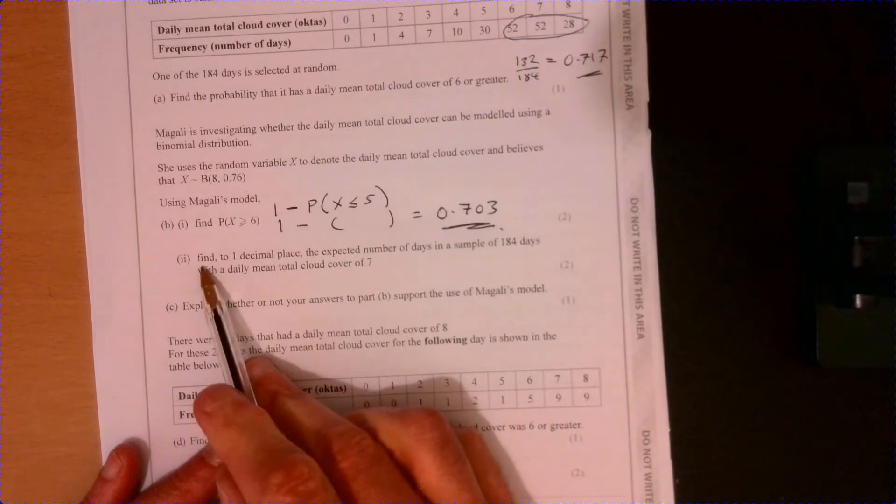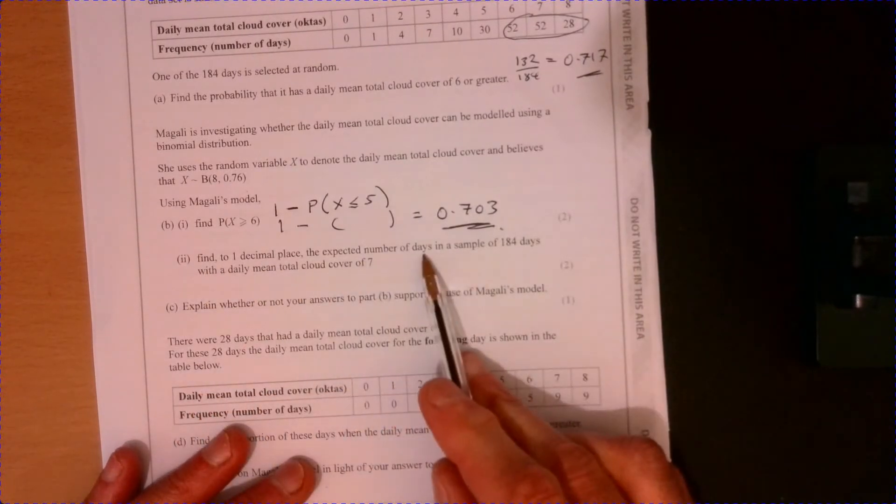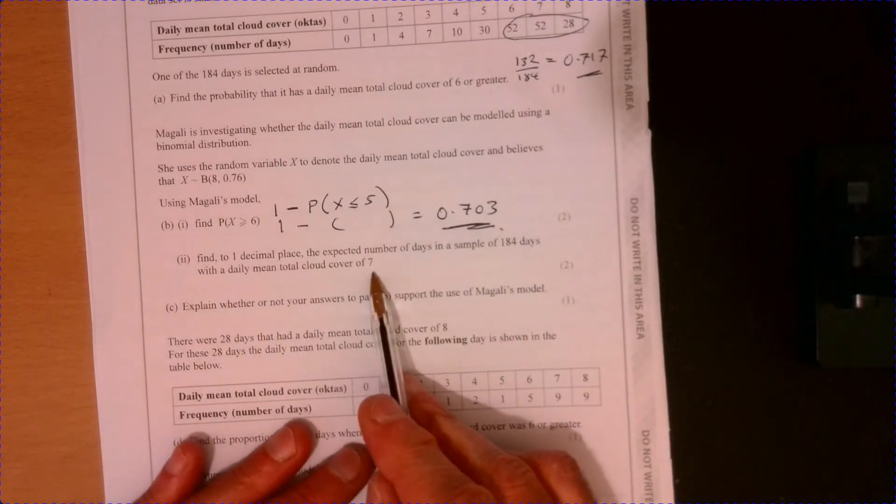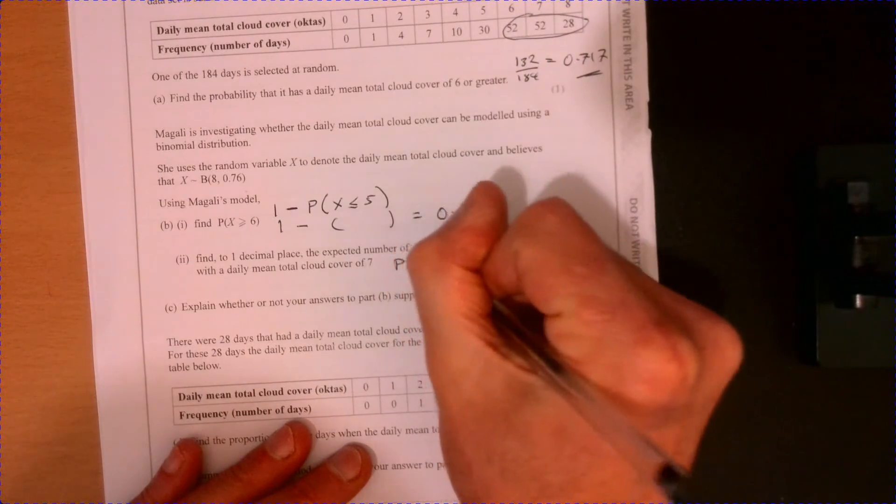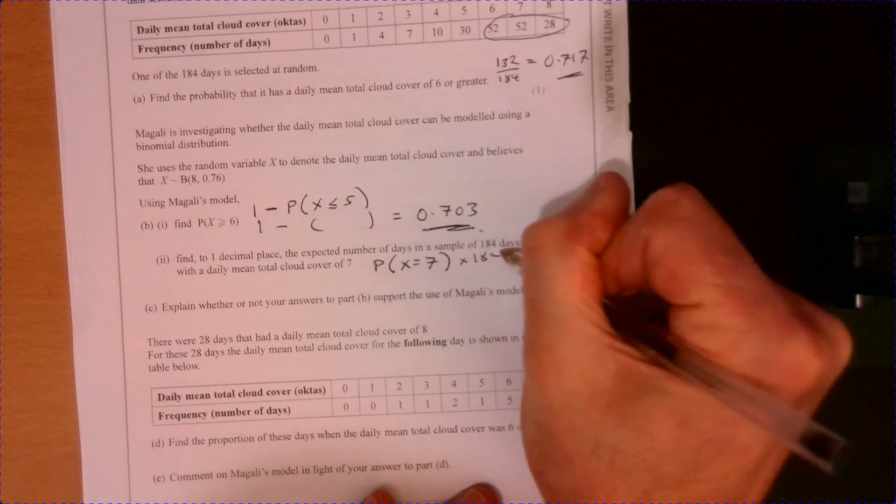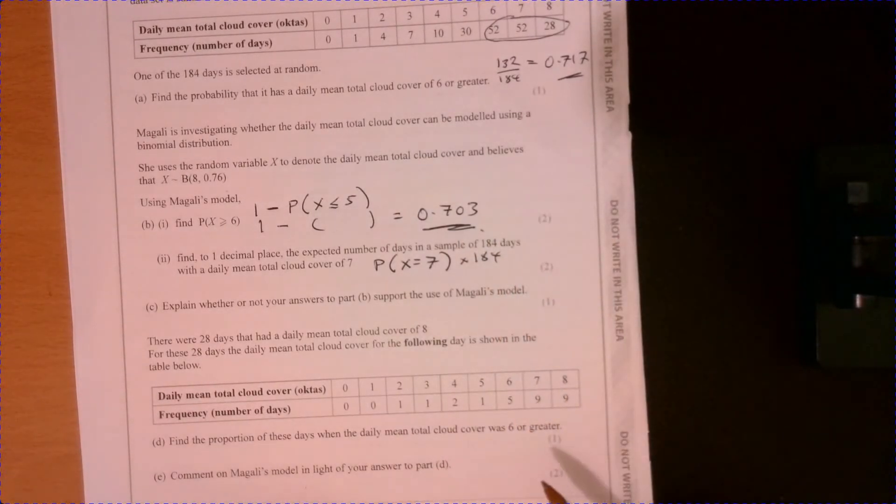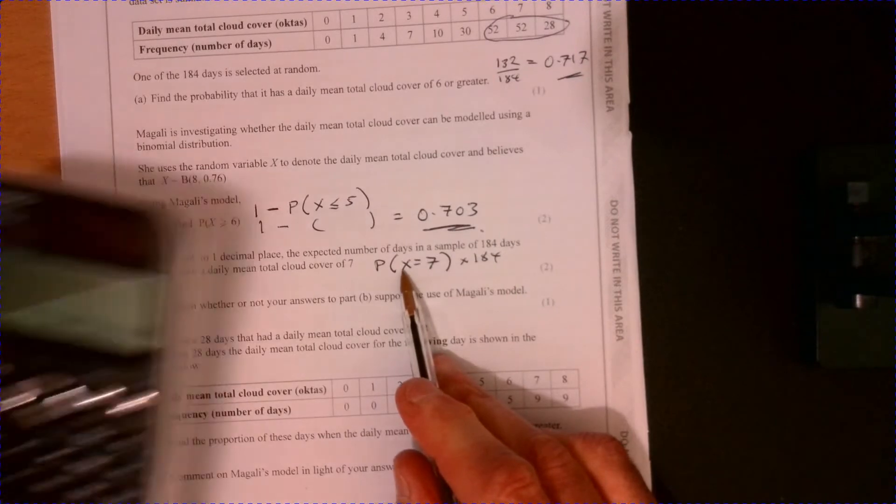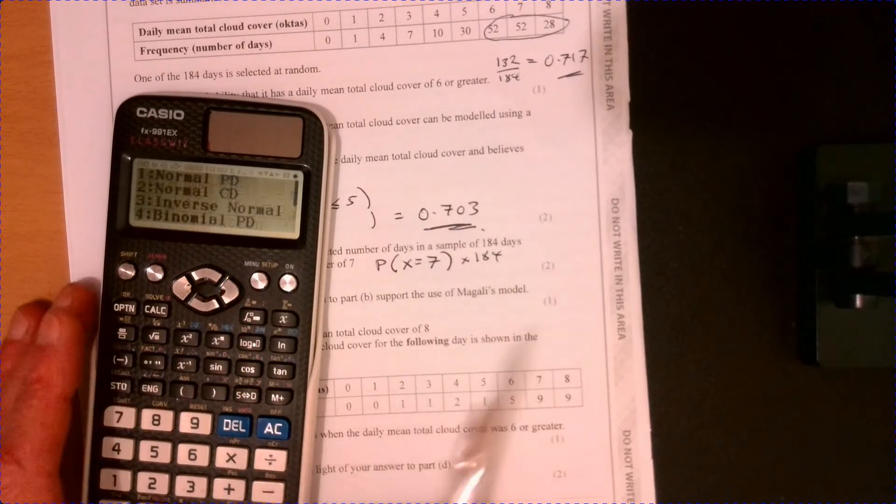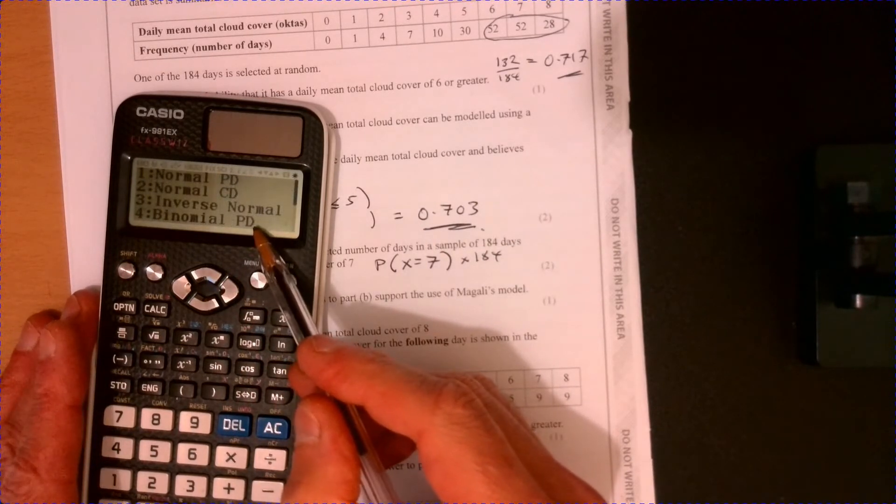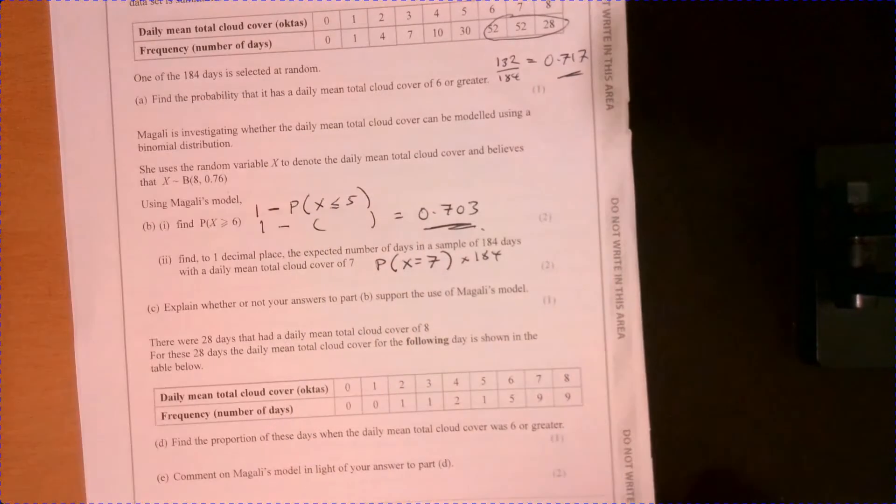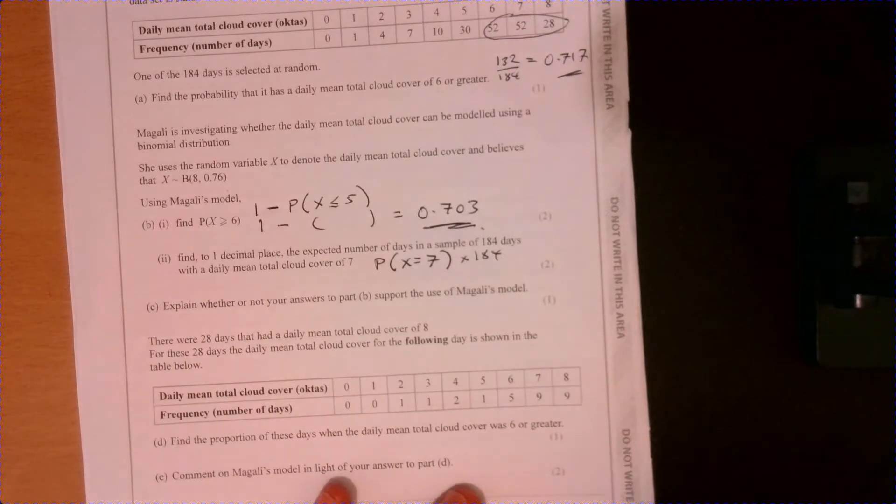Okay, and then on part two, find to one decimal place the expected number of days in a sample of 184 days with a daily mean total cloud cover of 7. So what that means is x equals 7, and then we're going to multiply that by 184. Now, this is really just testing to make sure I know how to use a calculator properly, because the only difference when I'm actually using my calculator is that I'm going to use this one.